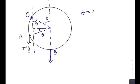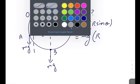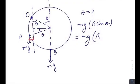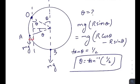If the ring has rotated by angle θ, then in stable equilibrium the clockwise torque equals the anticlockwise torque. The clockwise torque is mg times r·sin θ, and the anticlockwise torque is mg times (r·cos θ − r·sin θ). Solving this equation gives tan θ = 1/2, so θ = tan⁻¹(1/2).